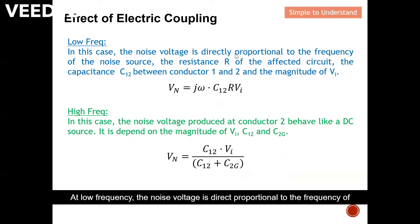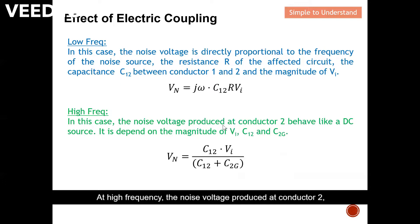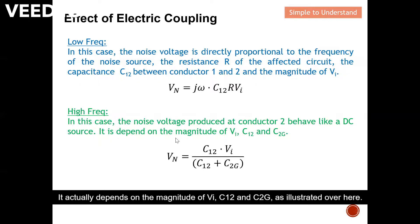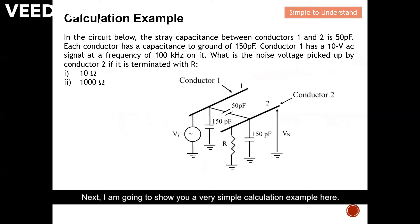To summarize: at low frequency, the noise voltage is directly proportional to the frequency of the noise source, the resistance, the stray capacitance C12, and the magnitude of Vin. At high frequency, the noise voltage at conductor 2 behaves like a DC source — it depends on the magnitude of Vin, C12, and C2G.